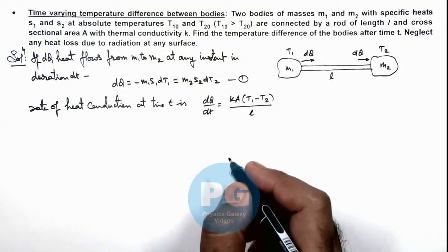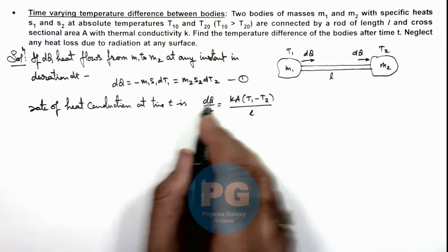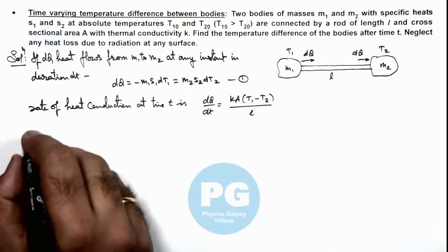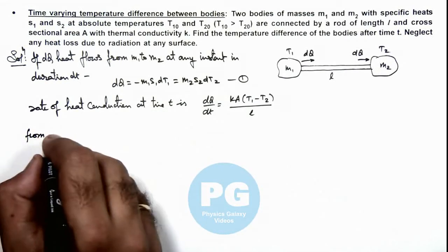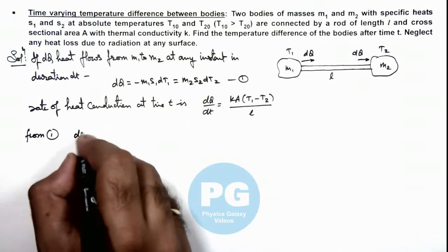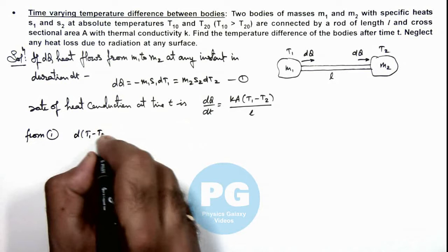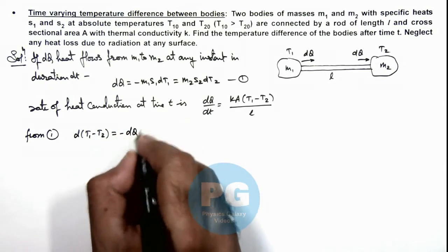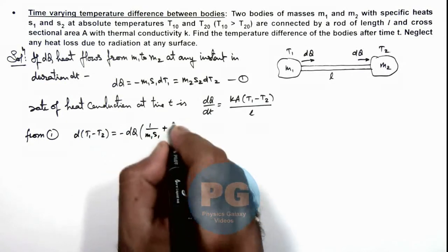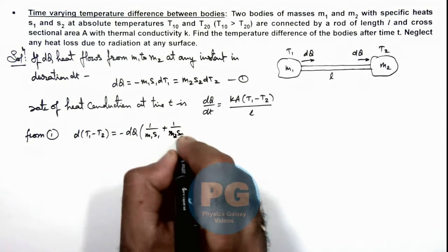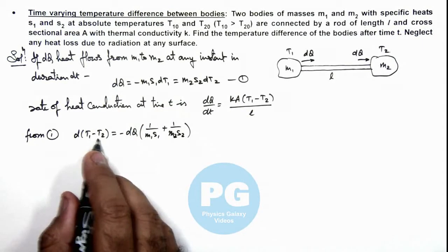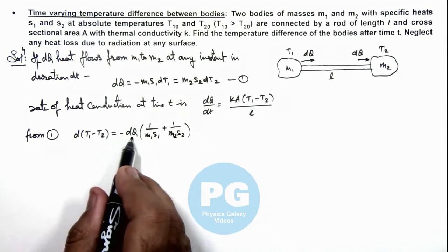Now in this situation, here the value of dQ we can substitute in terms of T₁ - T₂. So here we can write from equation 1, we can write from this relation d(T₁ - T₂) is equal to -dQ multiplied by (1/m₁s₁ + 1/m₂s₂). You can rearrange these terms to get the value of d(T₁ - T₂), and here we are getting dQ in terms of these values.